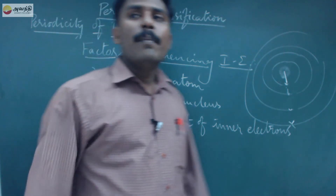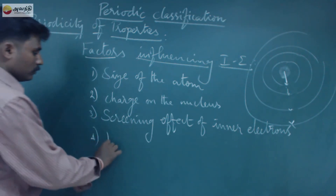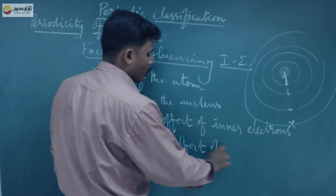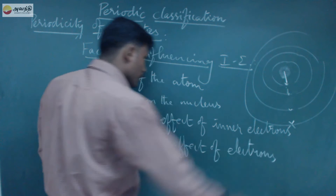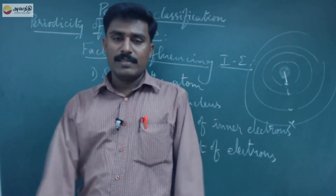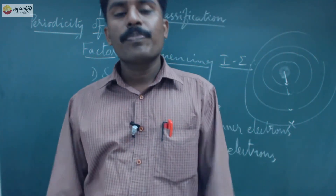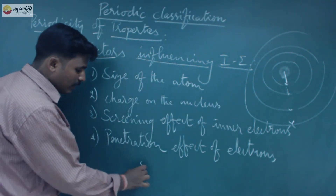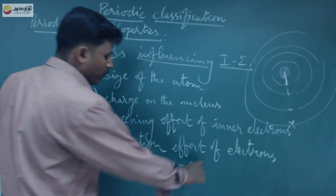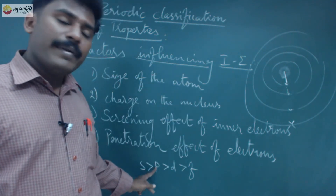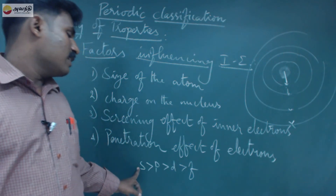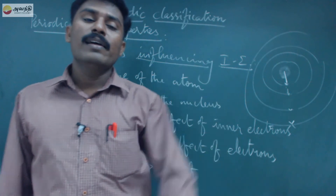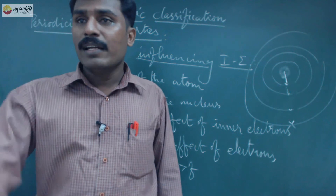The next factor is the penetration effect of electrons. Comparing S, P, D, and F orbitals — S is very close to the nucleus. If S is very close to the nucleus, that means the electron has lower energy. So the penetrating power order is: S greater than P, P greater than D, and D greater than F. That is called the penetrating effect of electrons because S is very closer to the nucleus.